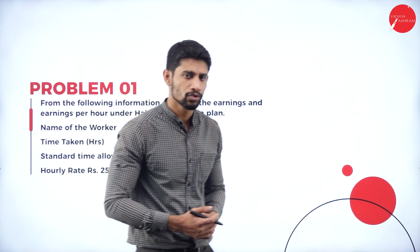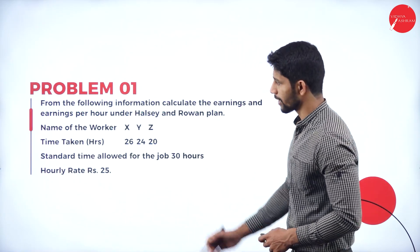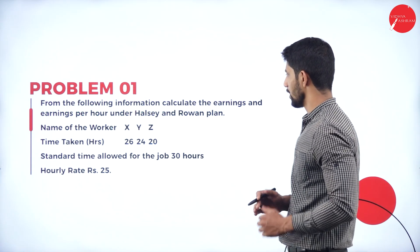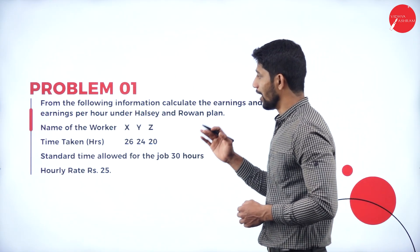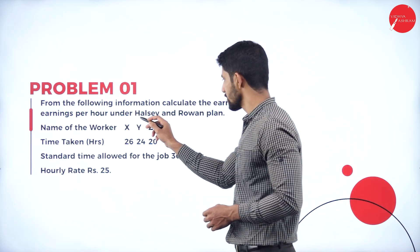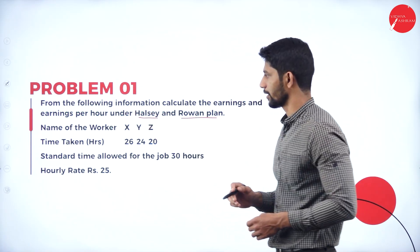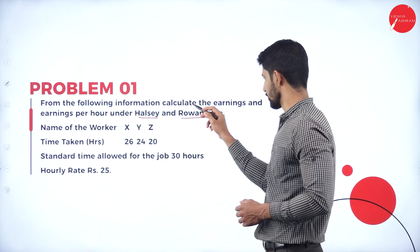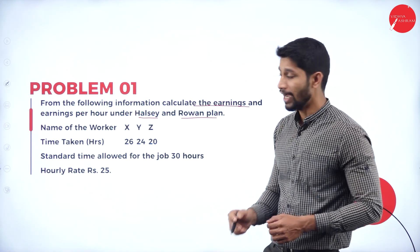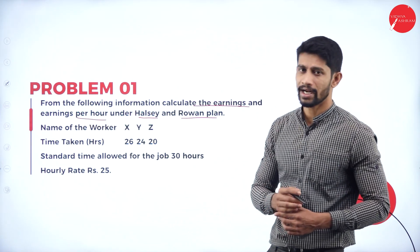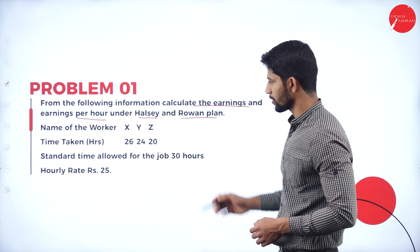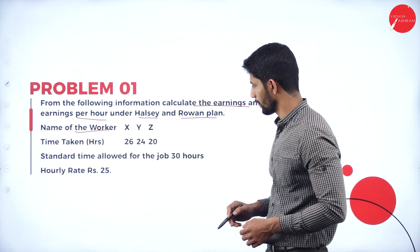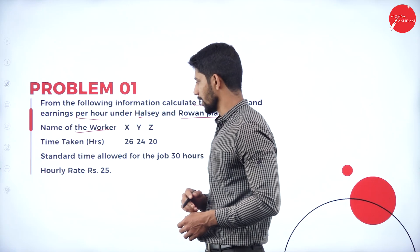Here is the first problem. From the following information, calculate the earnings and earning per hour under Halsey and Rowan Plan. We are supposed to find out the total earnings and earning per hour under both plans. The information given includes the name of the worker and the time taken.